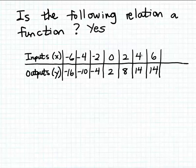The key thing we want to check is that each input is matched with one and only one output. Although 4 and 6 are both matched with the output 14, 4 is only matched with 14 and 6 is only matched with 14. Each input is matched with exactly one output, so this relation is indeed a function.